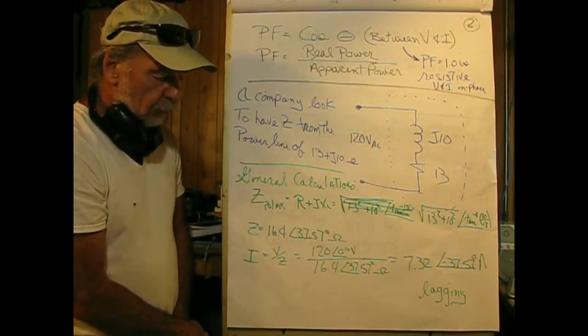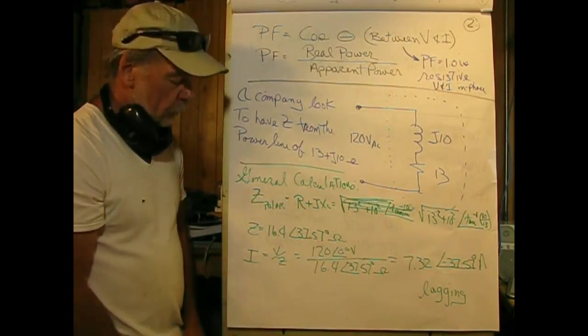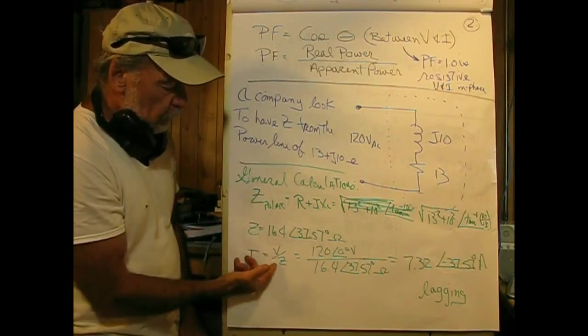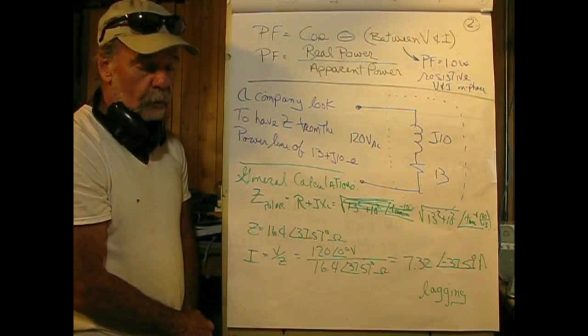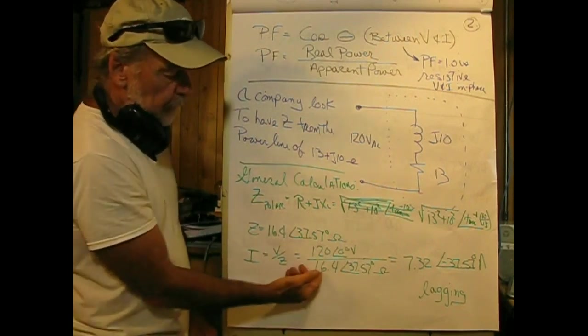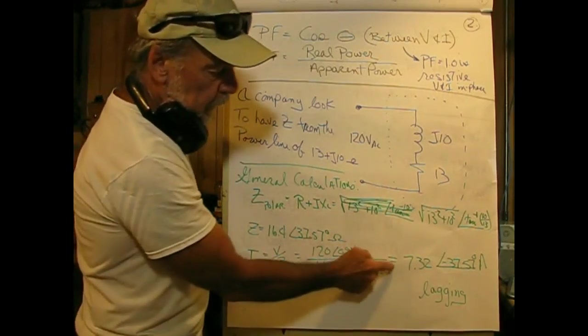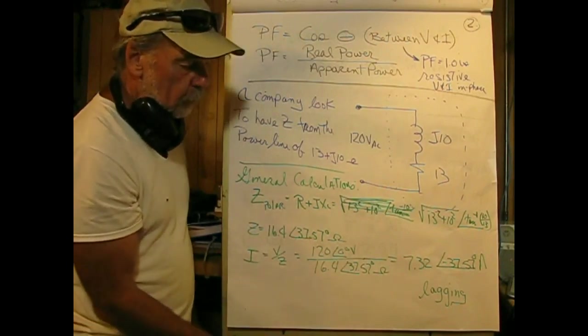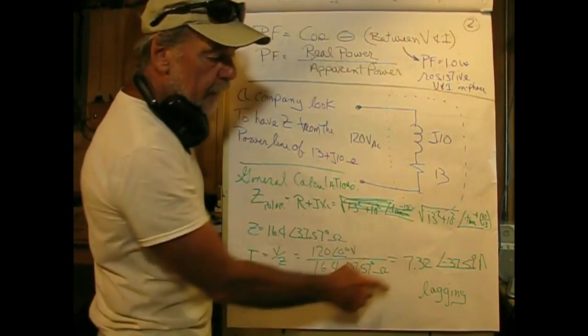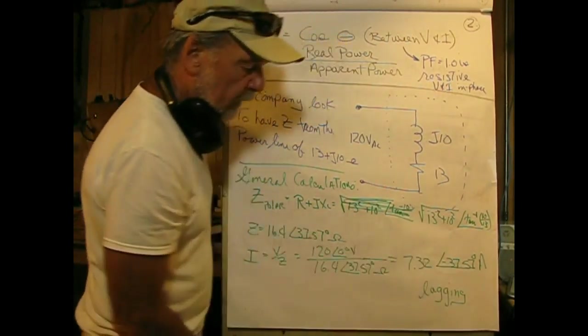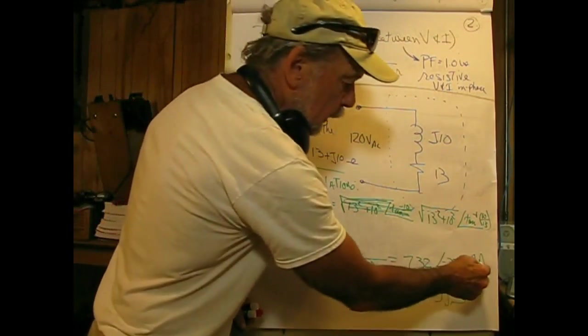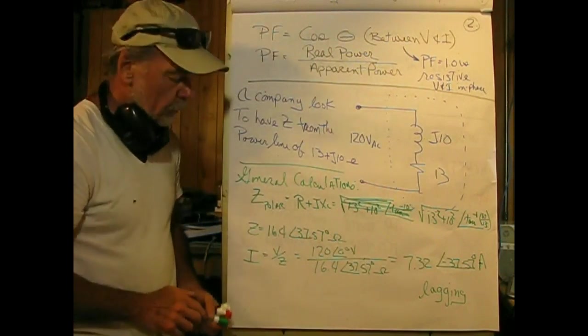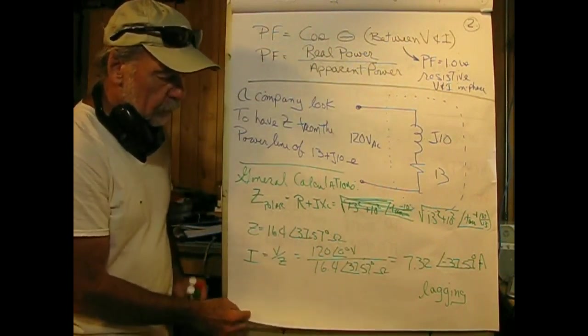Then we find the current flowing, which is V over Z. We have 120 at reference 0 degrees volts, divided by our impedance. We end up with 7.32 at negative 37.57 amperes. The current is lagging the voltage, so it's definitely an inductive circuit.